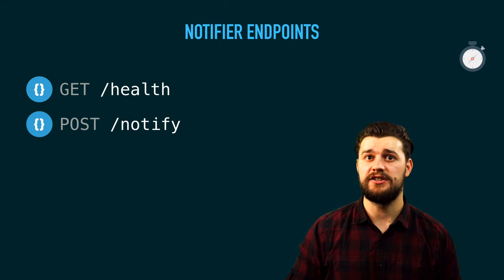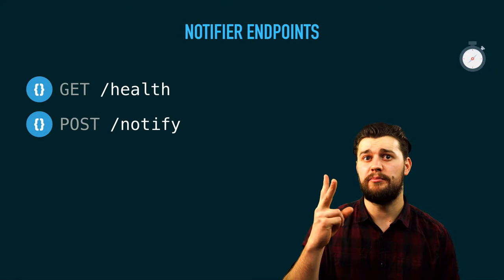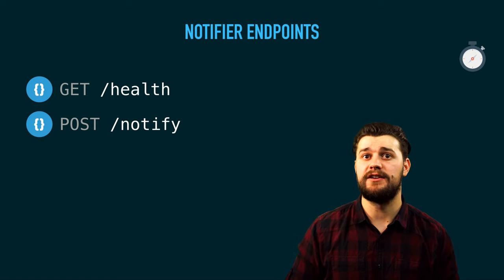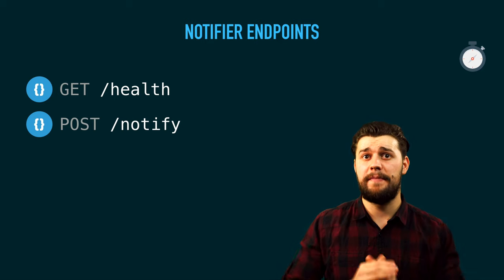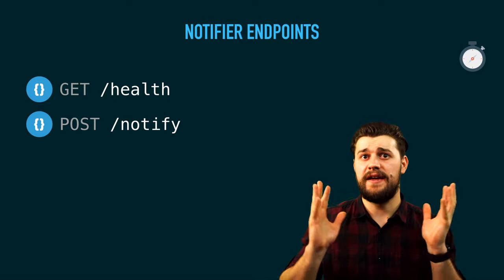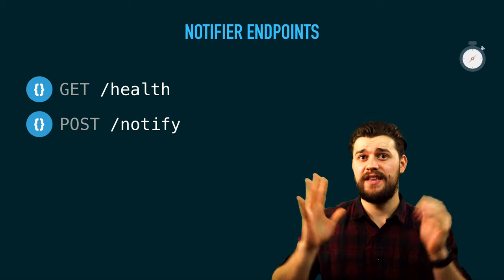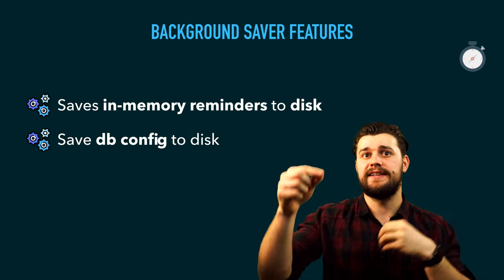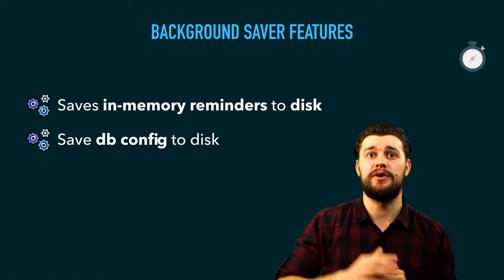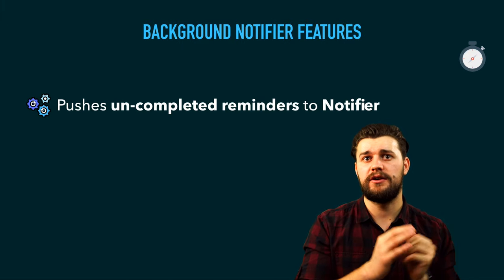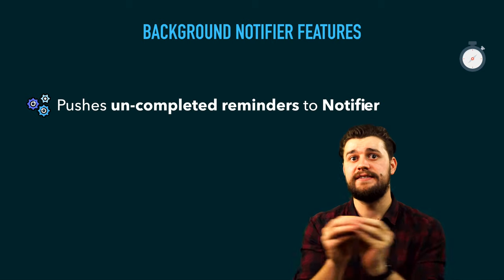Speaking of the notifier service, this is the Node.js application. We're going to have a small HTTP server with two endpoints. We'll have the health endpoint, which tells the backend API if the notifier service is up and running. And we also have the notify endpoint, which takes the data coming in from the backend API, processes it and sends us an OS notification so we can mark it as completed or delayed. All the records sent from the CLI are going to be stored in memory, which means they'll be lost if we shut down the application. Because of that, the background saver worker is going to take all those in-memory records and save them to disk once in a while. We also have the background notify worker, which takes the uncompleted reminders and sends them over to the notifier service.